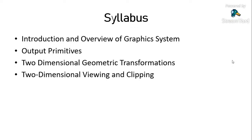The fourth chapter is two-dimensional viewing and clipping. After transformations, we discuss 2D viewing and clipping. If an object is between you and another object, some part may be clipped. You can remove unwanted parts and keep the wanted parts. There are many algorithms in 2D viewing and clipping that we will discuss, and we have to learn and derive those algorithms.